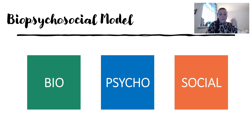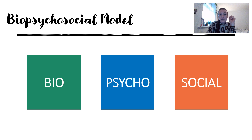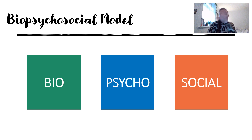The biopsychosocial model is probably the most dominant model right now — it was the first I learned at university and is still referred to in the service I work in. It's made up of three ideas. Biologically, genetics might predispose us to certain conditions — for example, if your parent is bipolar you have a higher chance of being bipolar. Biological treatments like medication or surgery can tackle these factors. The 'chemical imbalance' idea your doctor might mention actually echoes Hippocrates and the four humors.